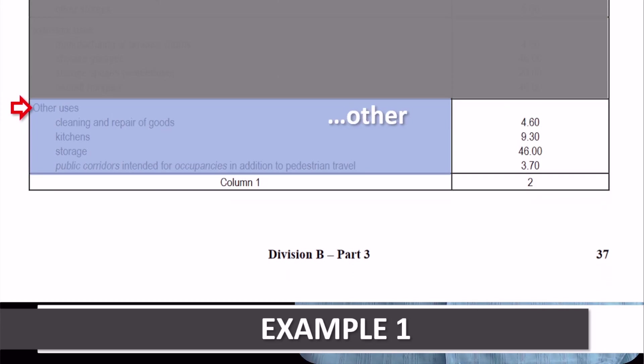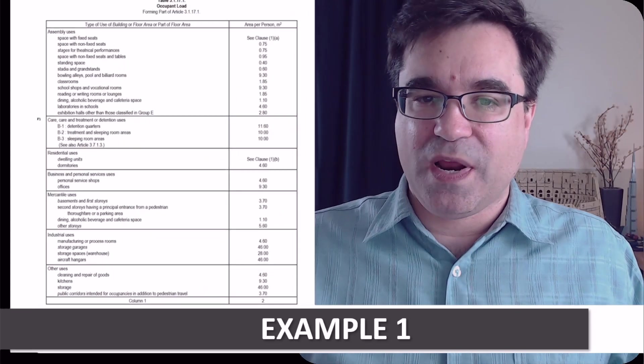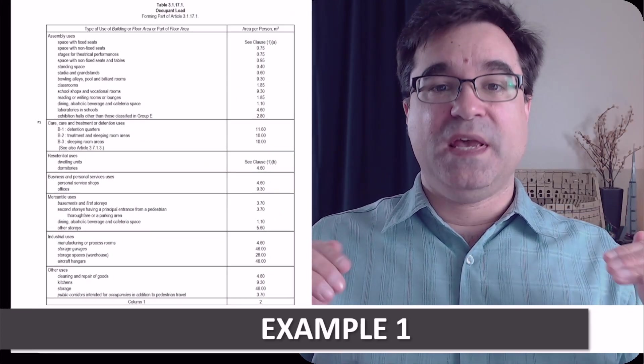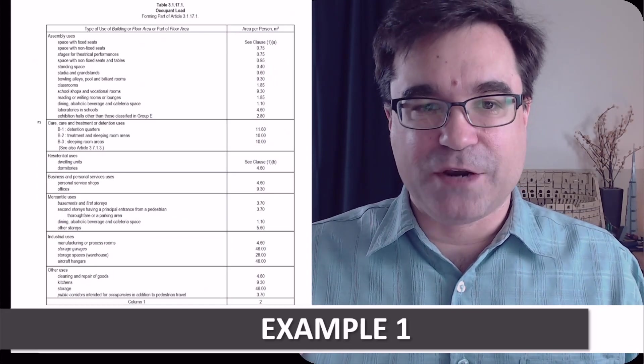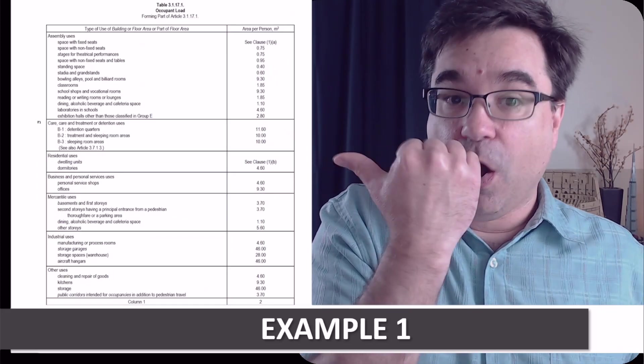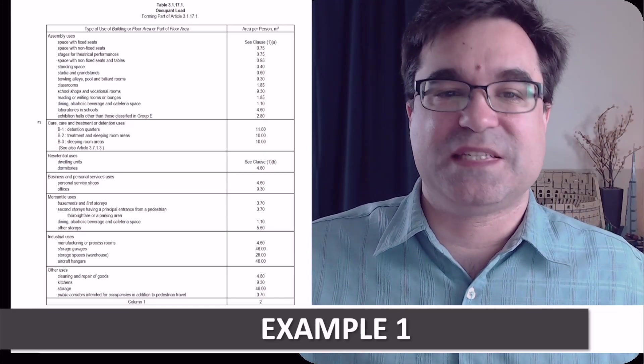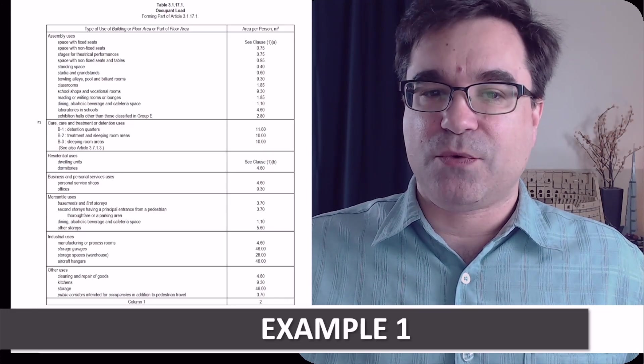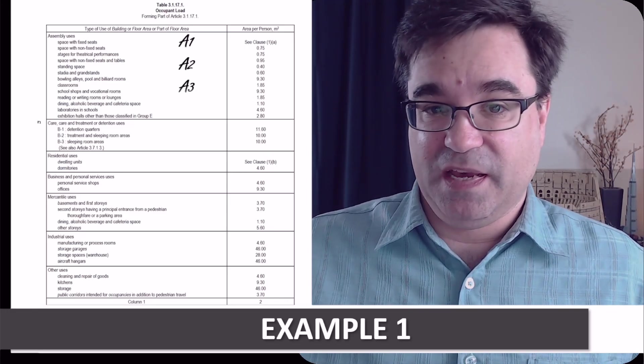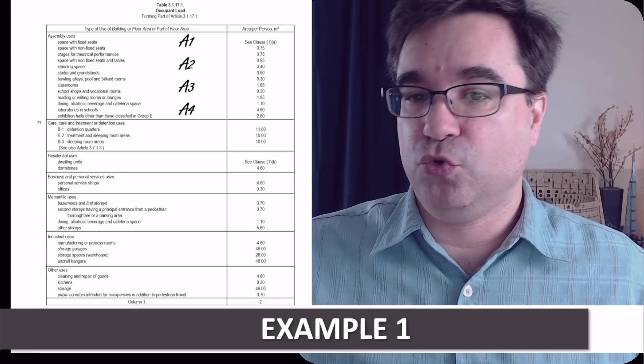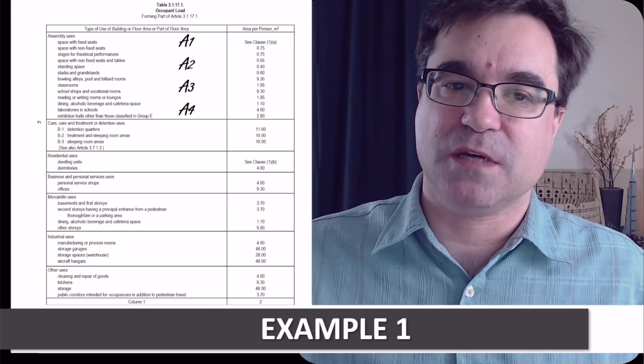What I normally do is write the corresponding letter of the major occupancy on the table to make it easier to use this table. So, for the assembly occupancies, I write A, like this, A1, A2, A3, and A4, because that's what these occupancies are.